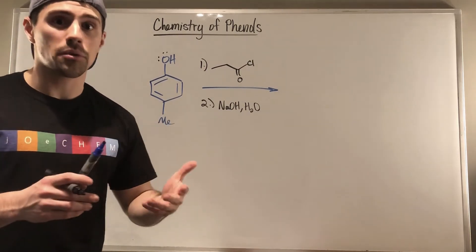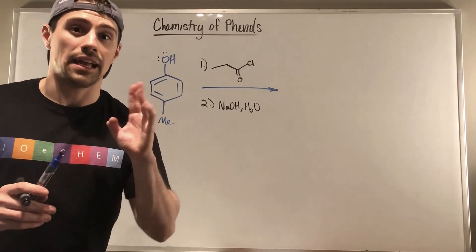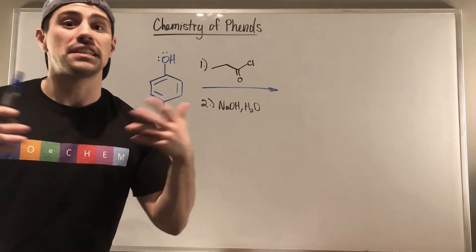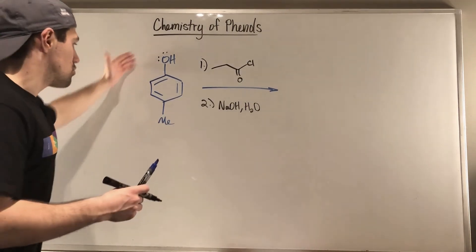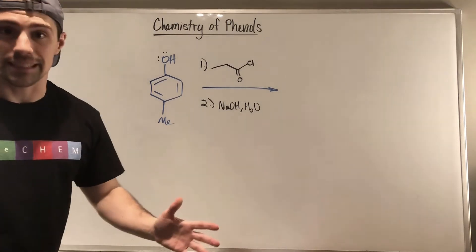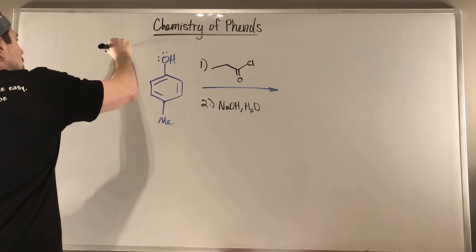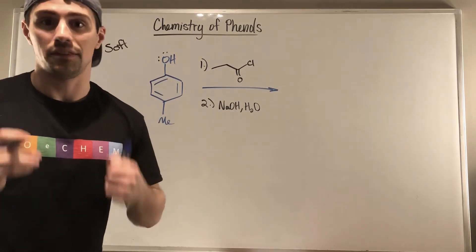So remember our hard nucleophiles, grignards, alkylithiums, and hydride from LAH. And soft nucleophiles are basically everything else under the sun. So clearly we have nothing super nucleophilic here, nothing crazy. So this is a soft nucleophile. Now, we will definitely be doing an addition, an addition elimination mechanism one time on this acid chloride.